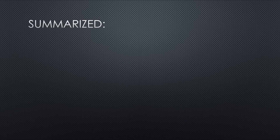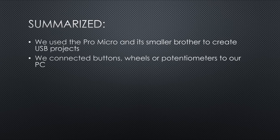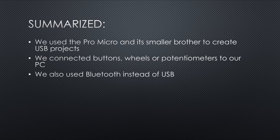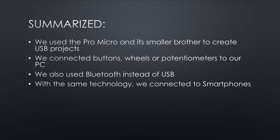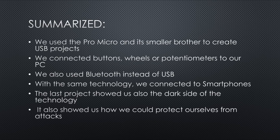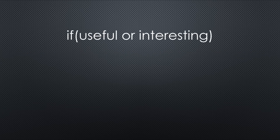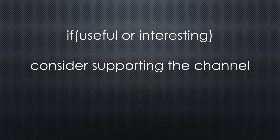These were the five projects. Summarized, we used the Pro Micro and its smaller brother to create projects using USB. We were able to connect not only buttons but also wheels and potentiometers to our PC. In the next two projects, we used Bluetooth instead of USB to connect our devices. Using this technology, we were also able to connect to smartphones and switch volume or take a picture. The last project with its two sides showed us the dark side of the technology and how rubber duckies work and how we could protect ourselves from their attacks. As always, you find the relevant links in the description. I hope this video was useful or at least interesting for you. If true, please consider supporting the channel to secure its future existence. Thank you. Have a nice summer. Bye.